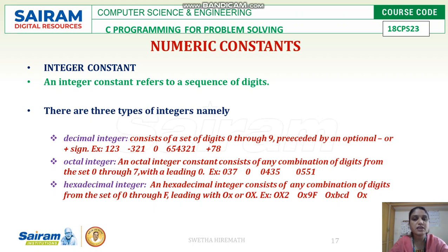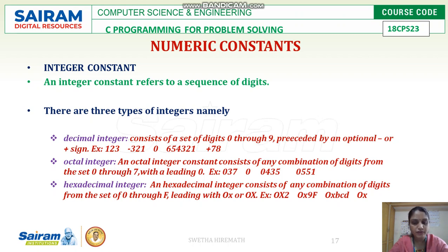Octal integers use a combination of digits from 0 through 7 — that is 8 numbers in total. Examples are 037, 0043, 0551. All these numbers have a 0 at the beginning. That leading 0 represents the octal number system.